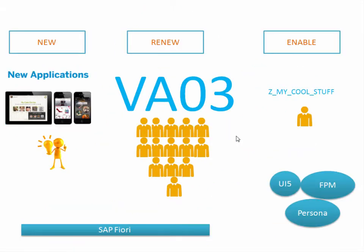To bring this to the customer landscape within existing business processes, SAP has characterized applications in three ways. Firstly, there are some applications which are very innovative and totally new — most of them have native applications as well, and we are calling them 'new.' Secondly, there are some applications which are very widely used and very popular, for example the VA03 transaction, a very popular sales order management transaction, and these are called the 'renew' category.